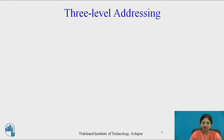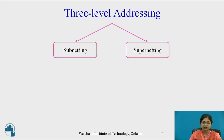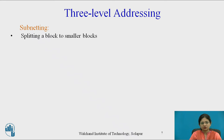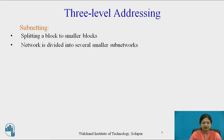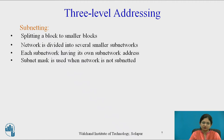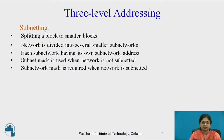Now let's see the concept of 3-level addressing in classful addressing. 3-level addressing gives two concepts: supernetting and subnetting. Subnetting is the idea of splitting a block into smaller blocks. The network is divided into several smaller subnetworks, each having its own subnetwork address. Subnet mask is used when the network is not subnetted, but a subnetwork mask is required when the network is subnetted.